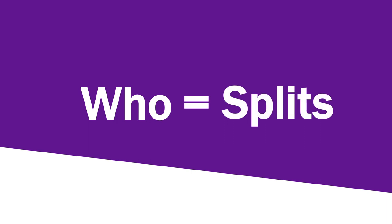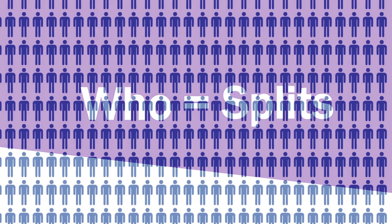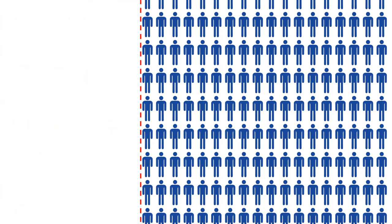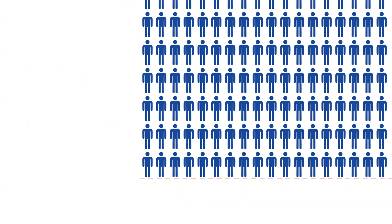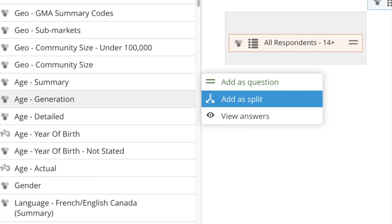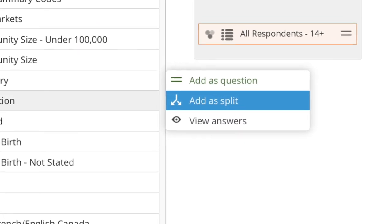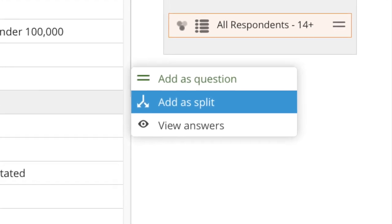When you add variables to define who it is that you want to study, you are splitting up the survey respondents and isolating the specific group you want to know more about. By default, you start with all of the people who took part in the survey, but as you add variables, you split them up into smaller groups. That's why you will select the option 'Add as Split' when choosing variables to define your target market.